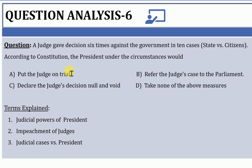The first answer option is: put the judge on trial. Second: refer the judge's case to the parliament. Third: declare the judge's decision null and void. Fourth: take none of the above measures. Among these four options, you are supposed to answer.